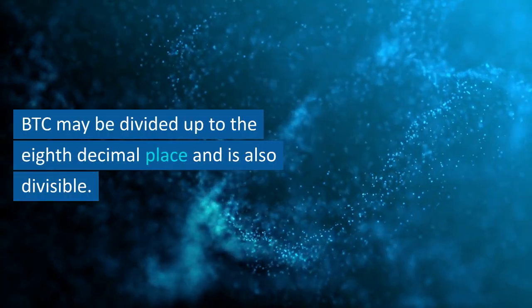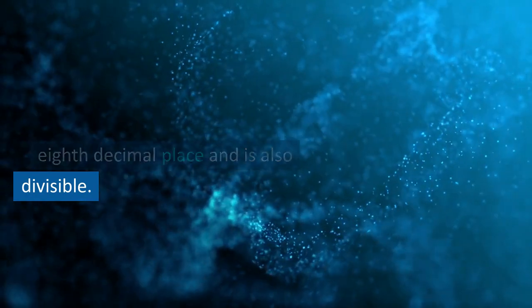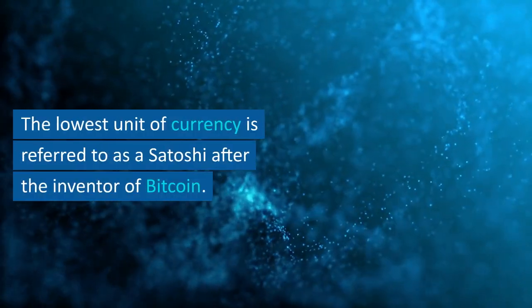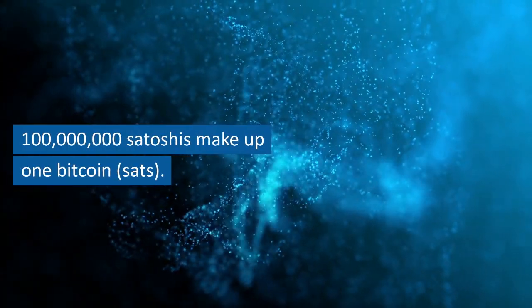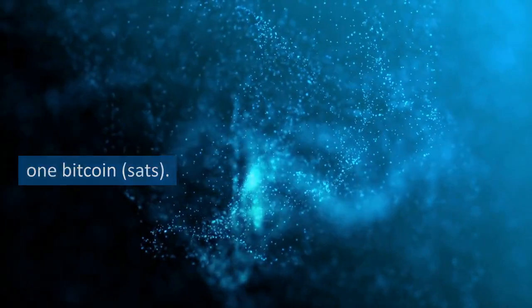BTC may be divided up to the eighth decimal place and is also divisible. The lowest unit of currency is referred to as a satoshi after the inventor of Bitcoin. 100 million satoshis make up 1 Bitcoin.